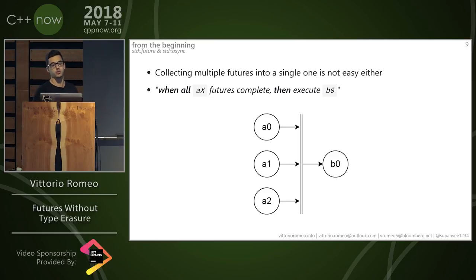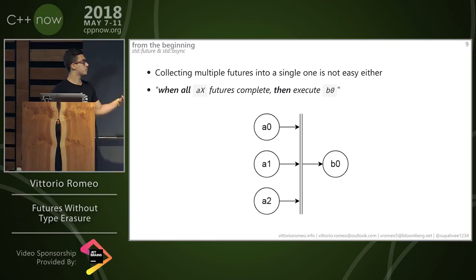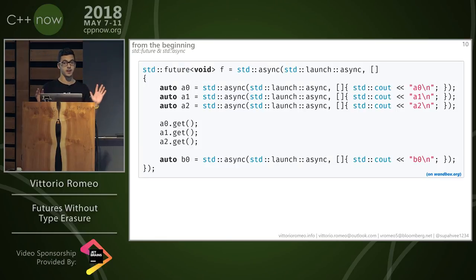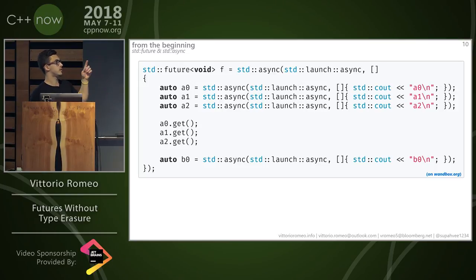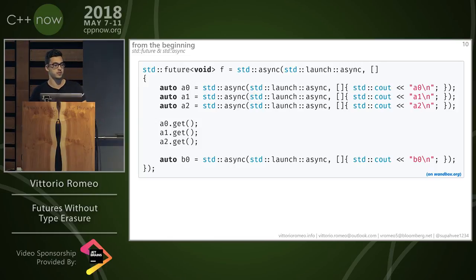If you want to collect multiple futures into a single one and attach a continuation, what we want to express is: when all the async futures are completed, then execute B0. A very naive way to do this is by having a future whose body contains async calls to the computations, then waits on all of them, then starts B0 — which is horrible, but I'm trying to point out that we don't have the right abstractions.